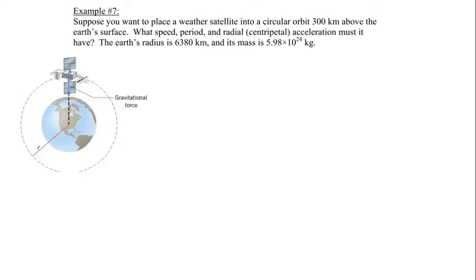Welcome to example number seven. Let's suppose you wanted to place a weather satellite into a circular orbit so that it's 300 kilometers above the Earth's surface.